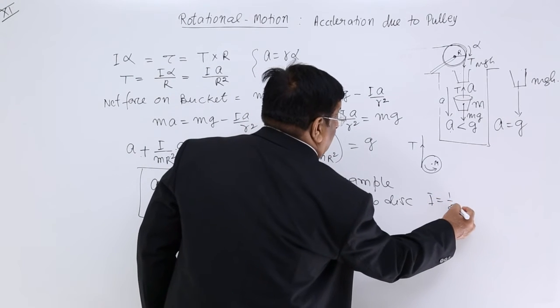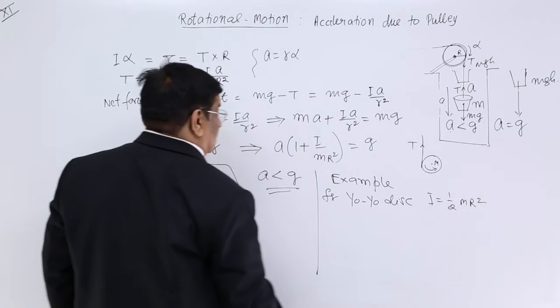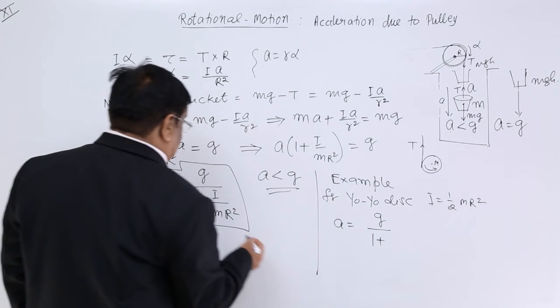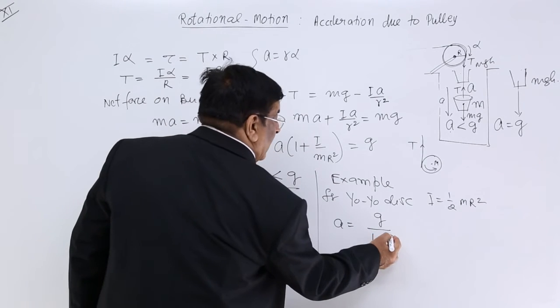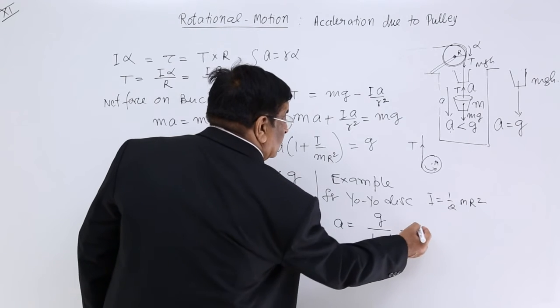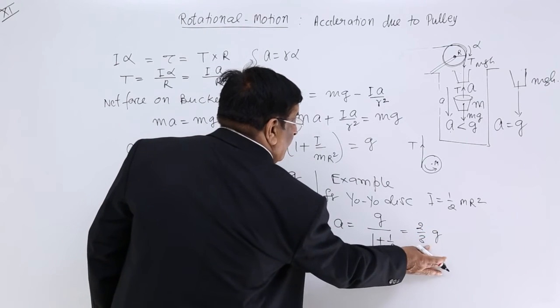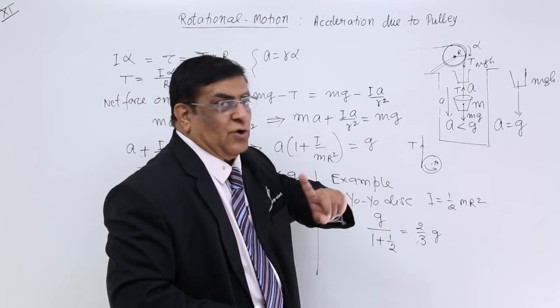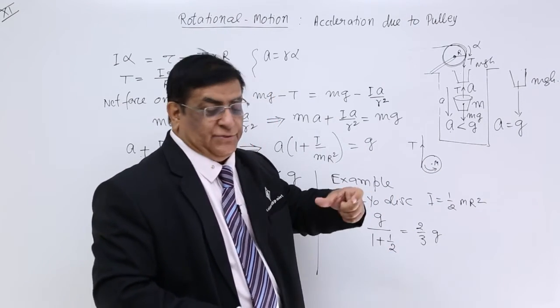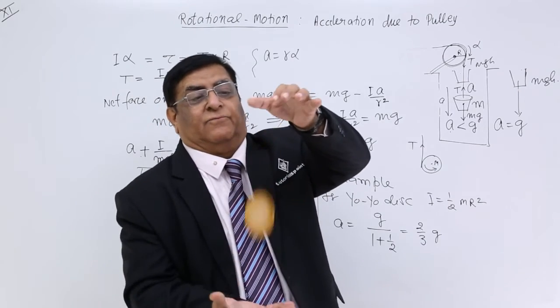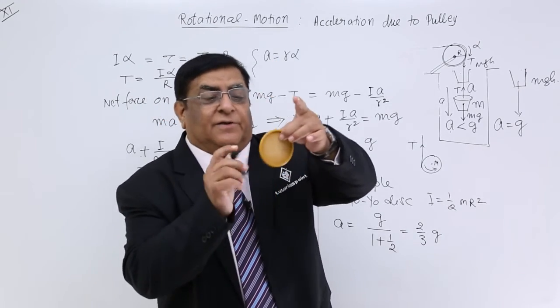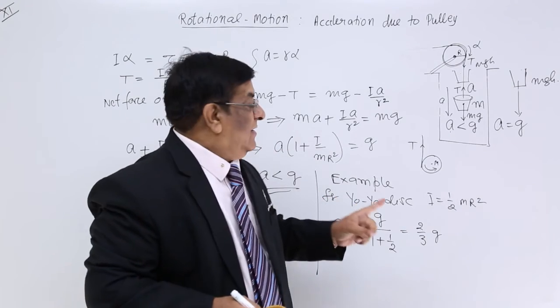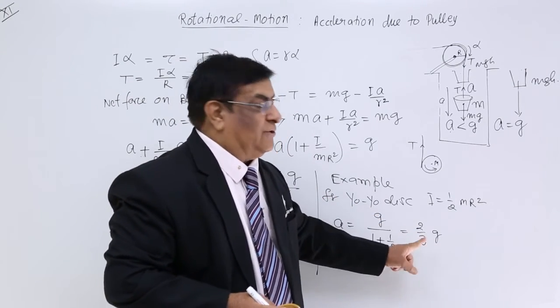For yo-yo disk, I is equal to half m r square. So how much is acceleration? Acceleration is equal to g upon 1 plus half m r square upon m r square, that is half. So this is 2 upon 3 g. So how much is the acceleration of yo-yo? When it comes down, it is not equal to g, it is 2 upon 3 equal to g. Otherwise, if I leave it here, it will fall down with acceleration g. But if I make a yo-yo with a string, then it will roll down and come. It will become less than that, less than g, only 2 third of g.